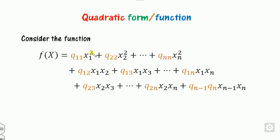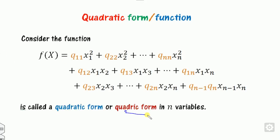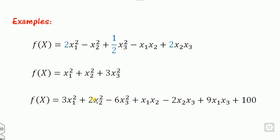Now, what is the quadratic form or quadratic function? Any function of degree 2 is called a quadratic function. In n variables, each of degree 2, it is called a quadratic form. For example, x1 plus 2x2 squared plus x3 squared plus x1*x2 plus x3 plus 7 is also quadratic because the degree is 2.